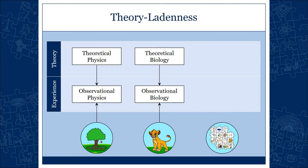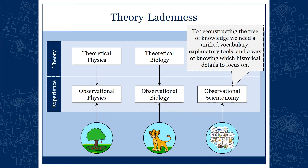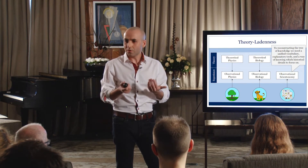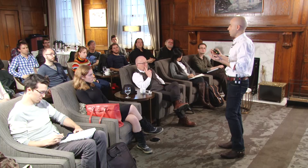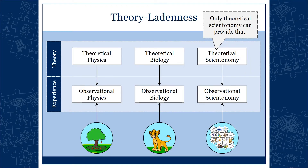The same thing exists — or at least has to exist — in our field. To reconstruct the tree of knowledge, we need three things: a unified vocabulary, explanatory tools, and a way of knowing which historical details to focus on. Should I focus on the color of Galileo's wallet? Whether he was married? The fact that he was in the Medici court? These decisions should be determined by the theoretical framework you accept — otherwise it's just a random decision. Only theoretical scientonomy can provide that.